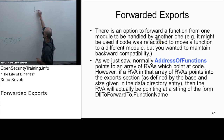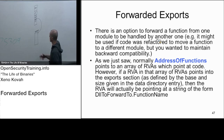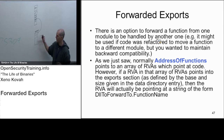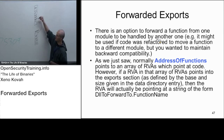Throughout the process, we've seen: DOS header, NT header which has file header and optional header, and then data directory. Data directory entry zero points at some exports information. That starts with a structure that has a few fields, then it's got the array of the export address table, export names table, and name ordinals table - all those lists and arrays I was just showing you.